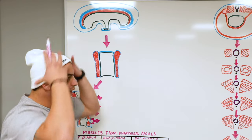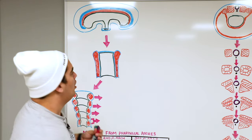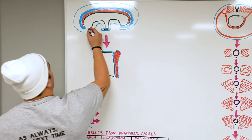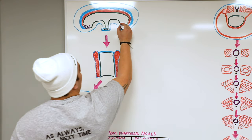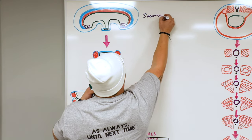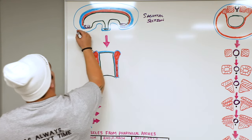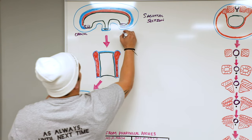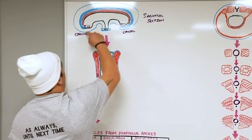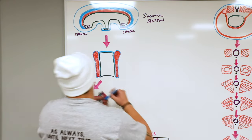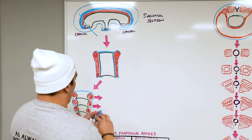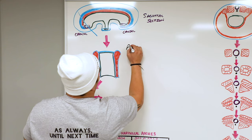Let's start with the development of head and neck muscles like the suprahyoid muscles. Here we have our embryo in sagittal section. The buccopharyngeal membrane is at the cranial end and the cloacal membrane is at the caudal end. We take a section near the buccopharyngeal membrane, cutting through the primitive pharynx and zooming in to see this view of the primitive pharynx.